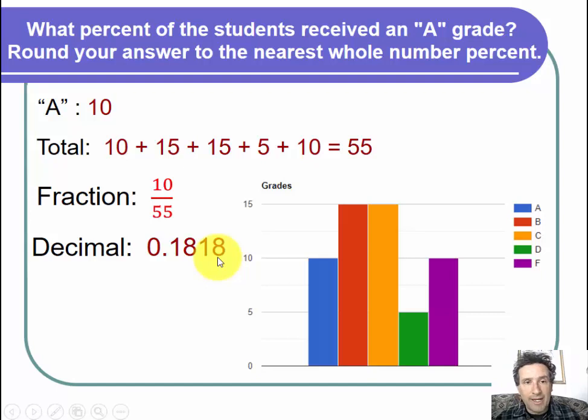It keeps going on and on. Now I don't want a decimal. I want a percent. So if you remember, to get a percent, we take this decimal place and we move it over two places to the right. That's the same as multiplying by 100%. And when I do that, the percent that I get was 18.18%.